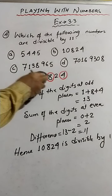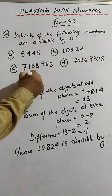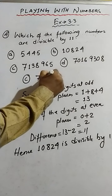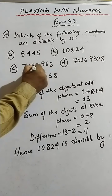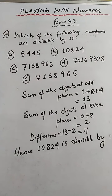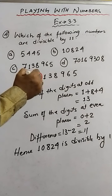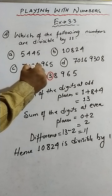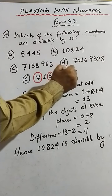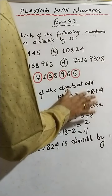Now what is sum number C? The number is 7, 1, 3, 8, 9, 6, 5 — a big number. We are going to encircle the digits at the odd places: the 1st, 3rd, 5th, and 7th positions. These are all the digits at odd places, so we are going to add them up.